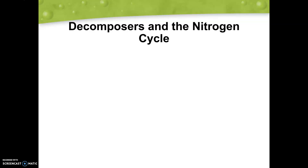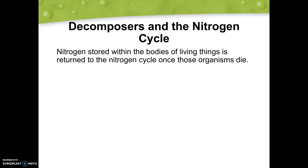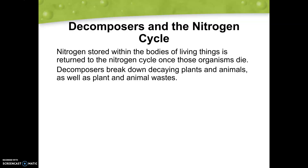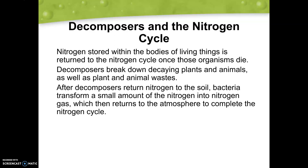Let's talk about decomposers in the nitrogen cycle. Once nitrogen is eaten, it ends up in the bodies of living organisms and in plants as well. When those animals and plants die, decomposers come in and break down the decaying organisms and their wastes, returning that nitrogen into the soil. Bacteria can then take that nitrogen and transform it — either keeping it available in the soil or converting it into nitrogen gas, which brings it back into the atmosphere and completes the cycle.